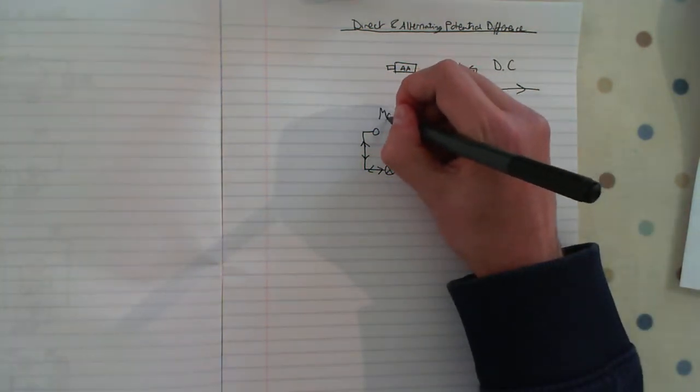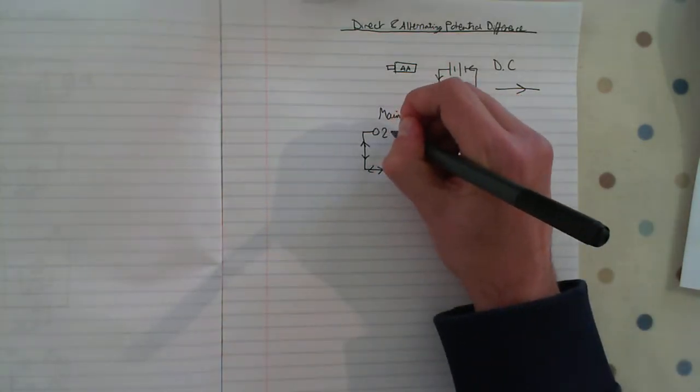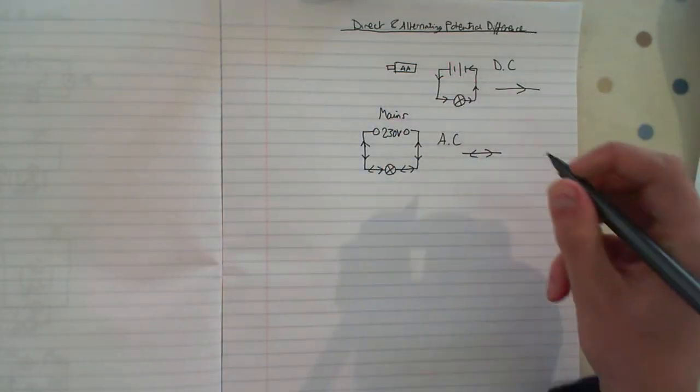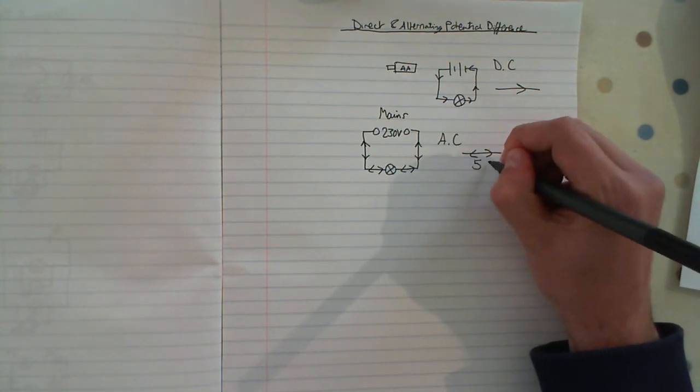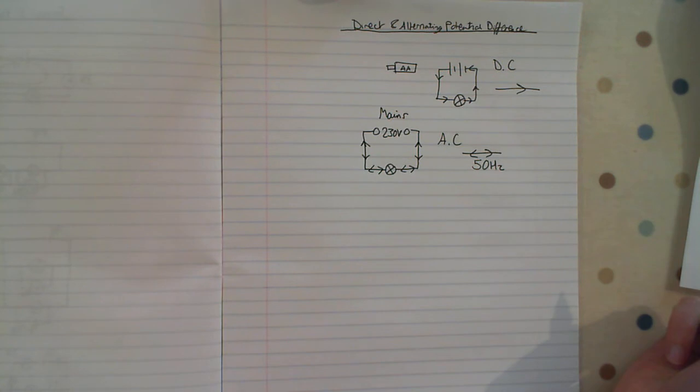And this comes from the mains, so plug sockets. You need to know that it's 230 volts, and you need to know that it changes direction with a frequency of 50 hertz. That means it alternates direction 50 times every second.